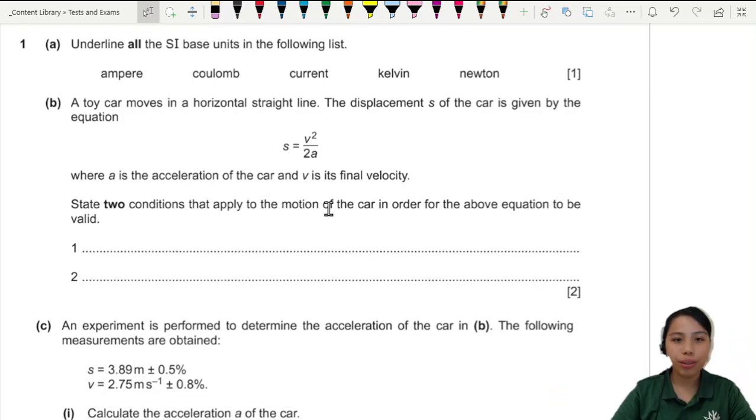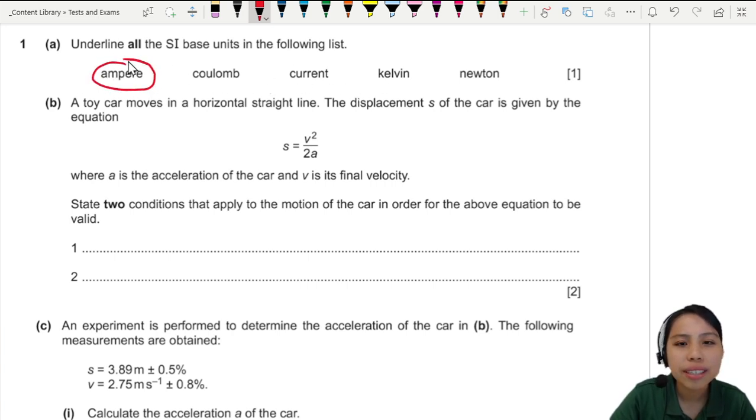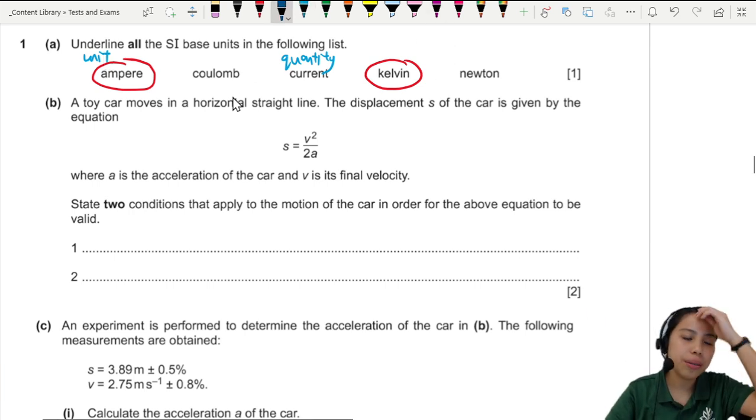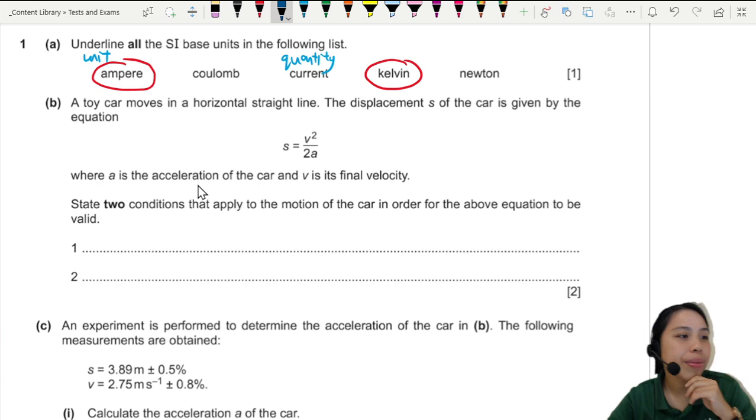Underline all the SI base units, so you need to know which are your base SI units. There's only going to be ampere and Kelvin. There are some impostors here. Current is a quantity, that's the name of the quantity. Ampere is the unit. We want the unit, not the quantity. Newton, you can break it down. Coulombs, you can also break it down.